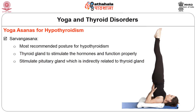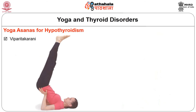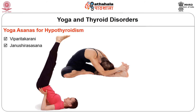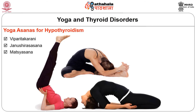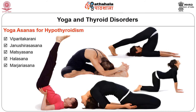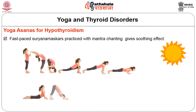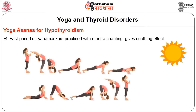Some asanas that help to fight hypothyroidism are Sarvangasana (shoulder stand), which is the most recommended posture. Doing this really helps the thyroid gland stimulate hormones and function properly due to the pressure effect of this asana. It simultaneously stimulates the pituitary gland, which is indirectly related to the thyroid gland. Other helpful asanas include Viparita Karani (inverted pose), Janu Sirsasana (one leg forward bend), Matsyasana (fish pose), Halasana, Marjariasana (cat stretch), and Surya Namaskars, which help control weight gain.